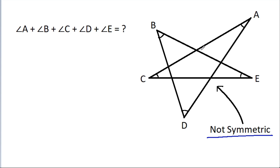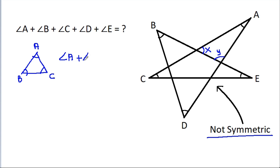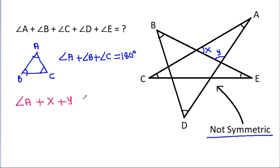Suppose this angle is X and this angle is Y. Then, in any triangle A, B, C, angle A plus angle B plus angle C is equal to 180 degrees. So here, angle A plus X plus Y will be equal to 180 degrees.